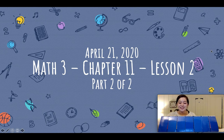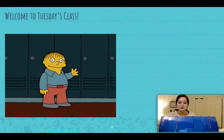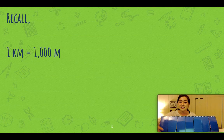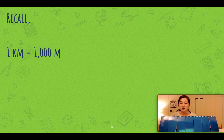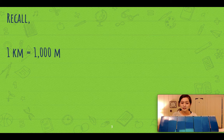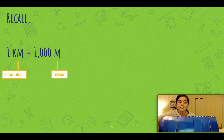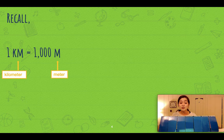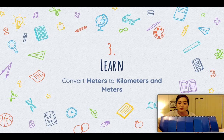Hi, all right, today is Tuesday. Let's recall what we learned yesterday. One kilometer is equal to 1,000 meters. What does KM stand for? What does M stand for? KM stands for kilometers and M stands for meters. In one kilometer, there are 1,000 meters.